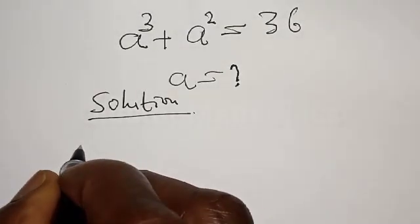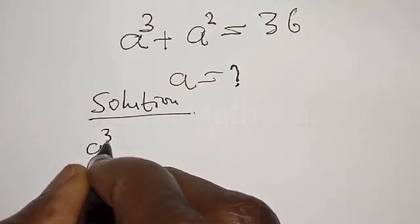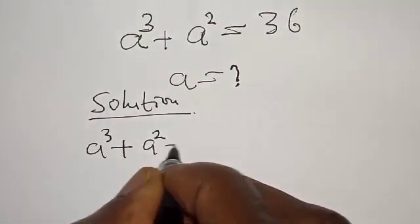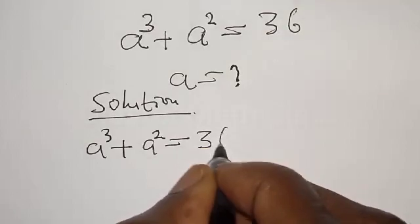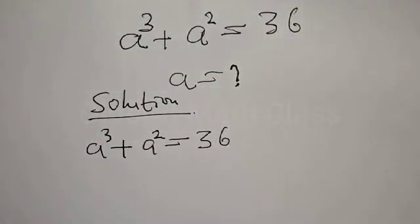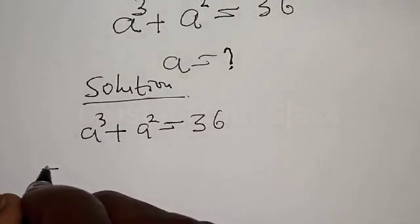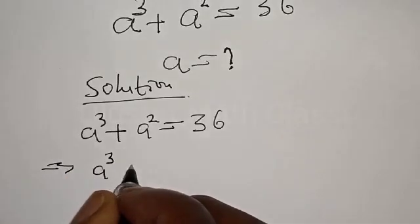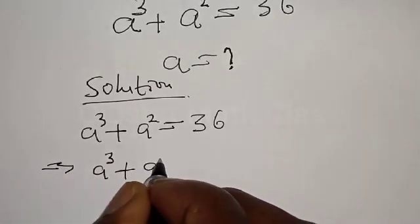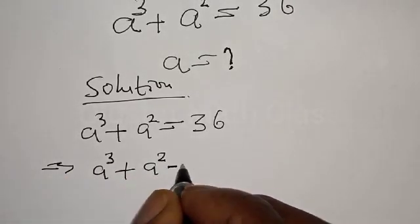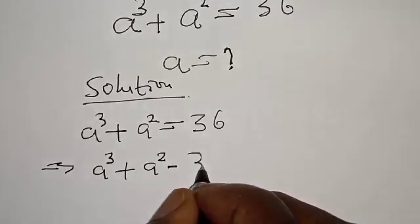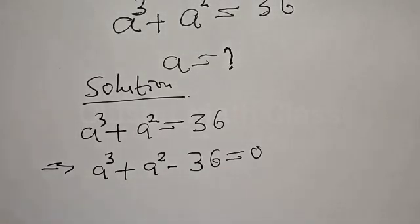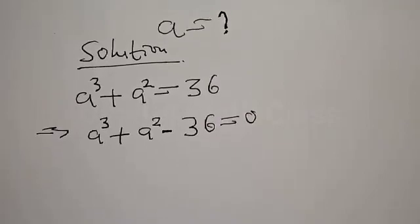We have a raised to power 3 plus a squared is equal to 36. This implies that we have a raised to power 3 plus a squared minus 36 equal to zero. Now let's find one of the roots first.